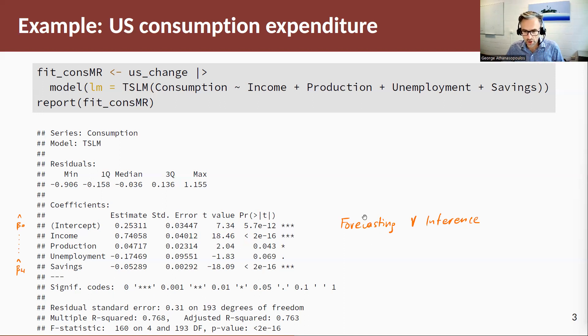Now, I've made a note here to talk about forecasting versus inference. Your output also gives you some t-stats and p-values associated with those. For the purposes of forecasting, we'll never consider these. In subsequent sections of the book, we will look at alternative ways of selecting predictors or dropping predictors, but inference will not be one of them.